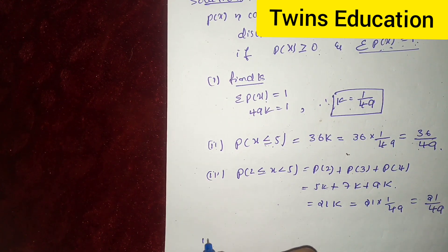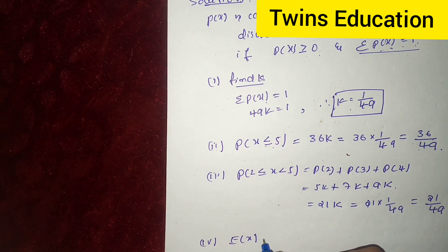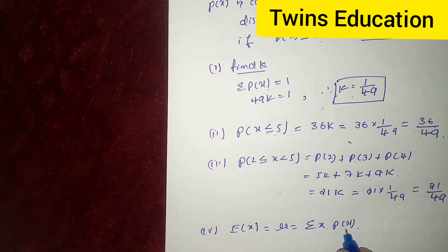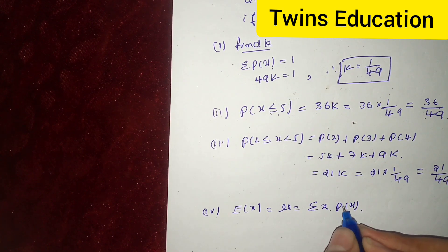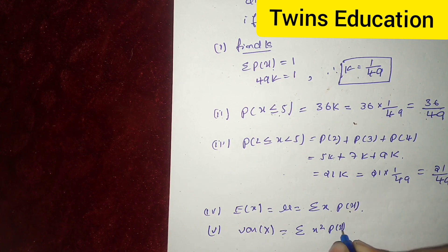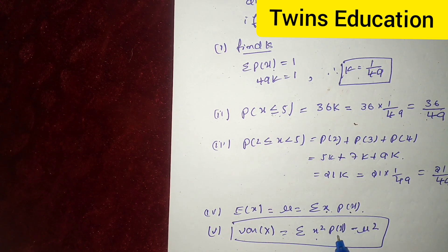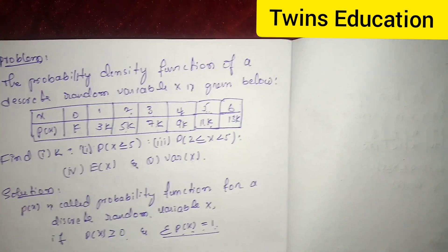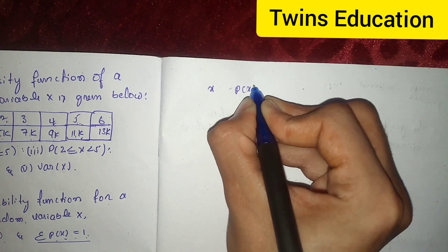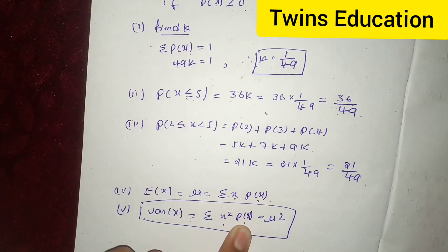Now I will find E of x, that is mean. What is the formula for mean mu? Summation of x into p of x. We don't have x into p of x, so we have to find and I will find later. Fifth condition, variance of x. What is the formula for variance of x? Summation of x square p of x minus mu square. This is the formula. We don't have x p of x and x square p of x, so we will find from the tabular column. Let us tabulate all values here.